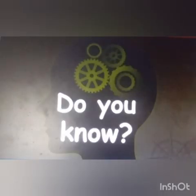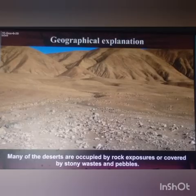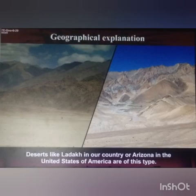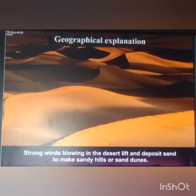Next topic is 'Do You Know?' — just for our knowledge. About 25% of the deserts on earth are sandy deserts. Many deserts are occupied by rock exposures or covered by stony waves and pebbles — pebbles means small stones. Some have high hills with narrow rocky pinnacles — pinnacles means high pointed rocks. Deserts like Ladakh in our country or Arizona in the United States of America are of this type. Strong winds blowing in the desert lift and deposit sand to make sandy hills or sand dunes.